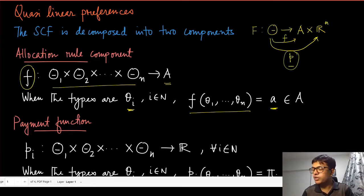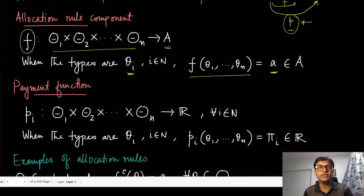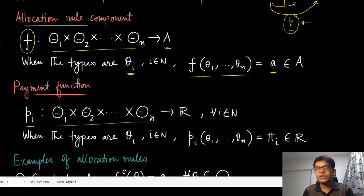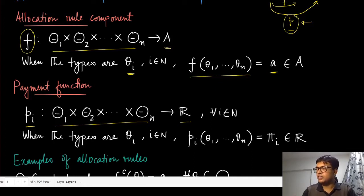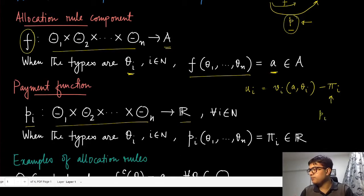The second component, denoted by p, is a collection of functions — a vector of functions — because we define a payment for each player. For player i, the payment function picks one real number given the reported types. This real number can be positive or negative. Recall that utility has the form v_i(a, theta_i) minus p_i, so p_i is exactly this real number, which we can write as p_i(theta_1, ..., theta_n).